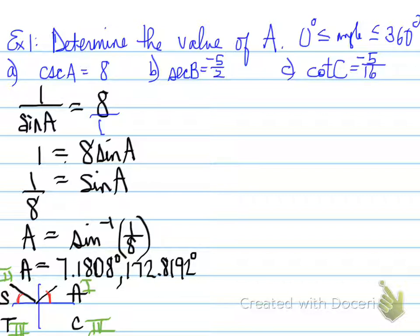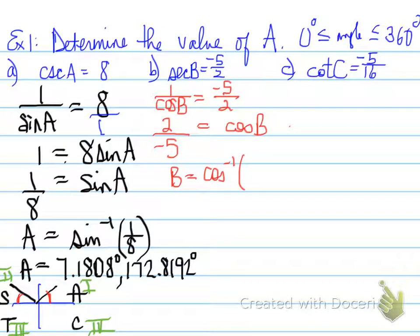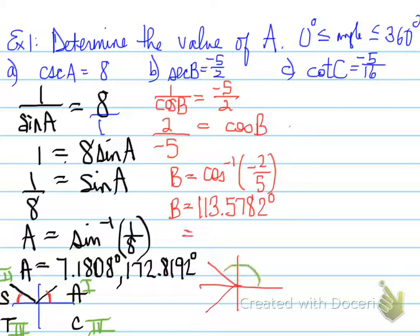Let's find the value of secant B. Secant equals 1 over cos B, and that equals negative 5 over 2. Cross multiply and divide. You will have 1 times 2, which is 2, equals negative 5 times cos B. We move the negative 5 over to the other side, and we get 2 over negative 5 equals cos B. To find an angle, we must do the inverse.